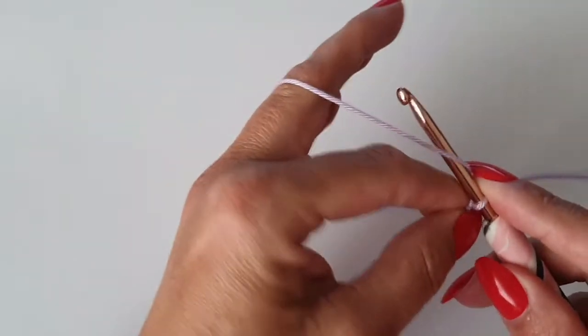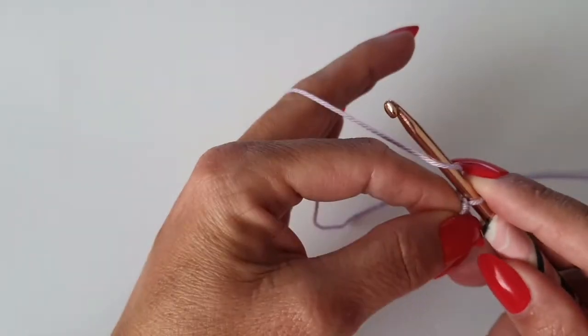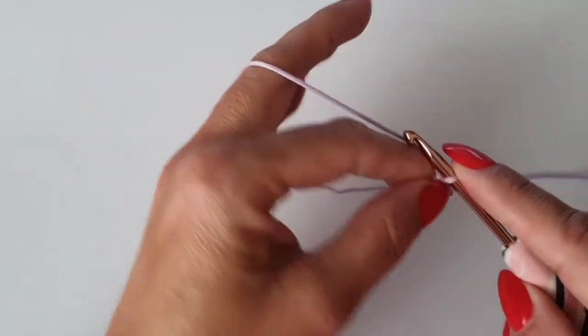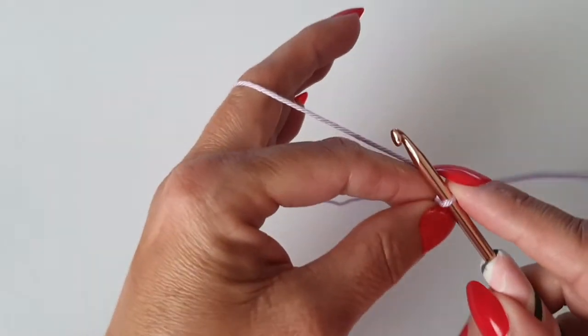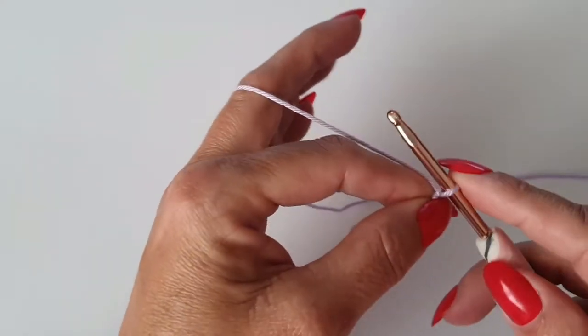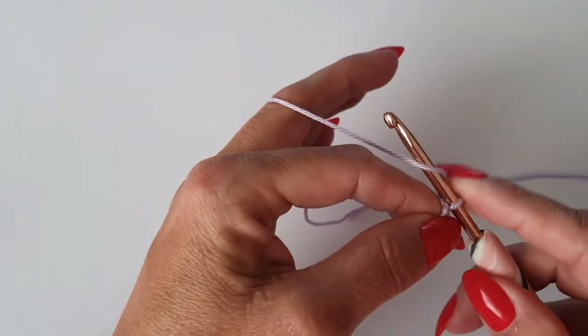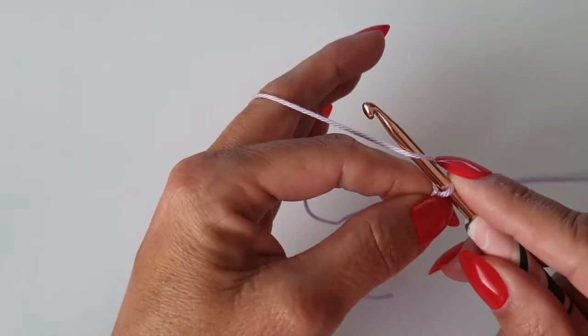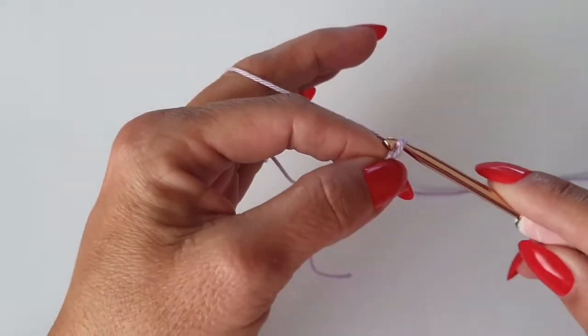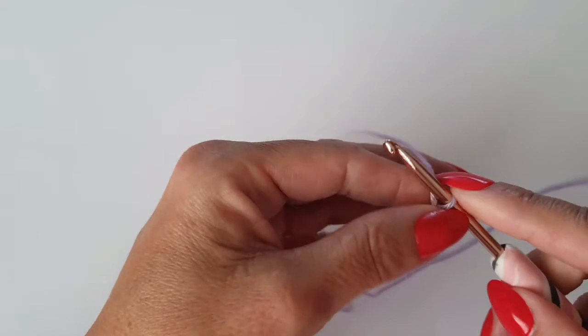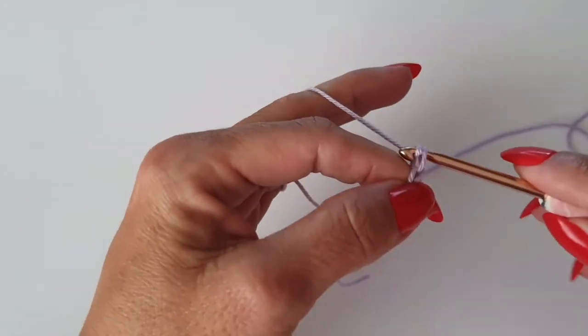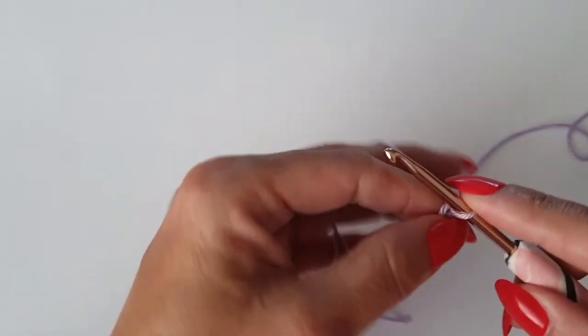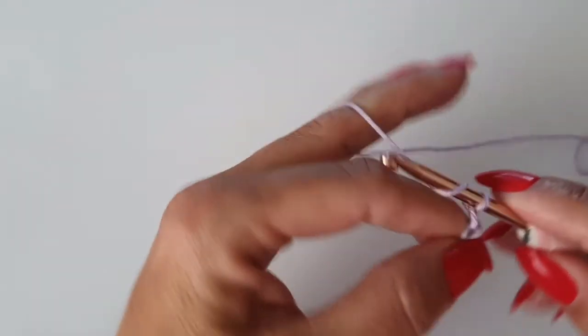Okay, so your hook can then move freely to catch the yarn. Okay, so for a chain stitch, all you're going to do is yarn over the hook - so if ever a pattern asks you to yarn over, that's what you're doing - and pull it through. And that is a chain stitch, and you just keep going like that.